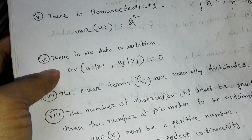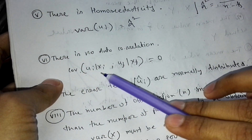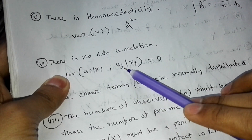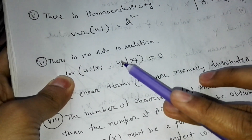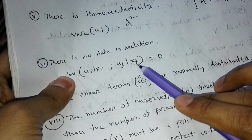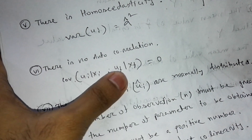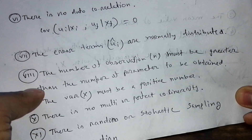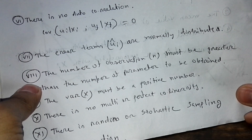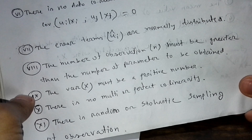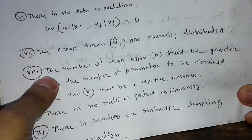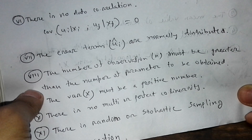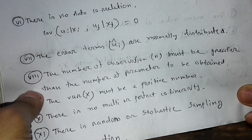Property six says there is no autocorrelation — if we have two sets, both are independent with no relation. The covariance between (ui, xi) and (uf, xf) is zero. Property seven says the error terms ui are normally distributed. Property eight says the number of observations n must be greater than the number of parameters (beta 1, beta 2, etc.) to be obtained.